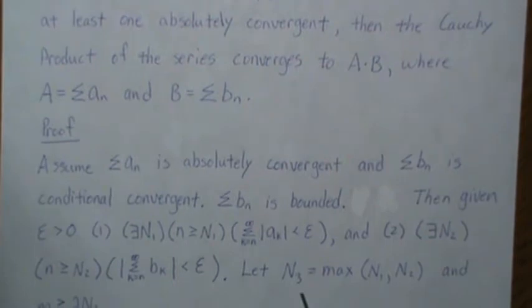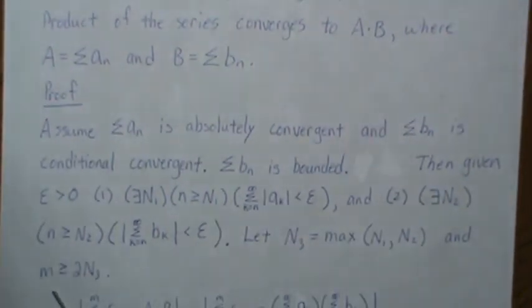So let's let N3 be the maximum of N1 and N2 and let's let M be twice as big as N3.